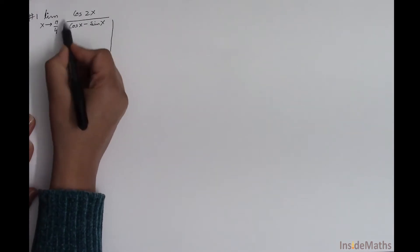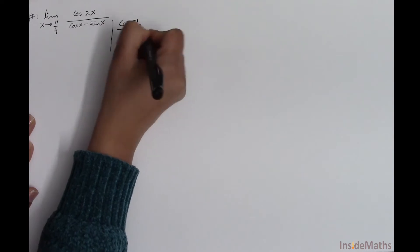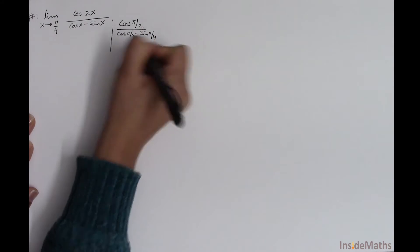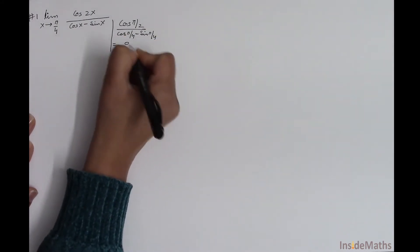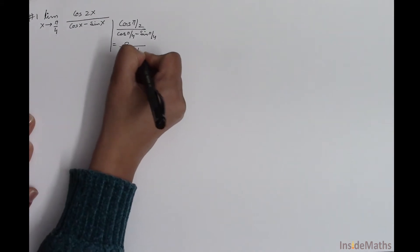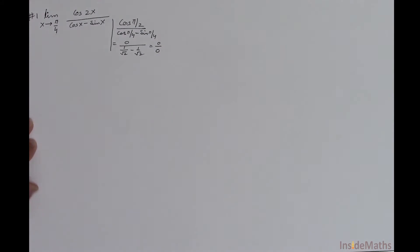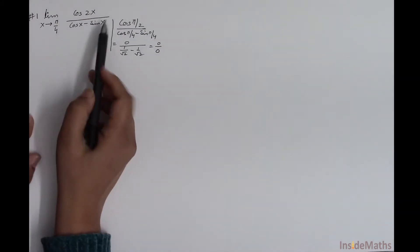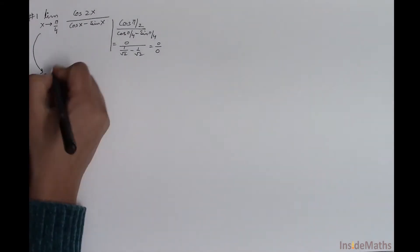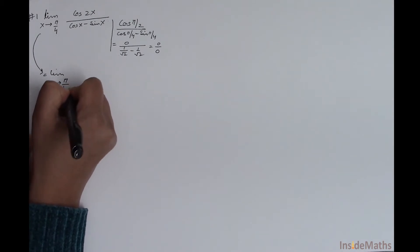When I put π/4 into this function, I get cos(π/2) over cos(π/4) minus sin(π/4). cos(π/2) is 0, cos(π/4) is 1/√2, and sin(π/4) is 1/√2, so we get 0 over 0. This means the direct substitution method fails.